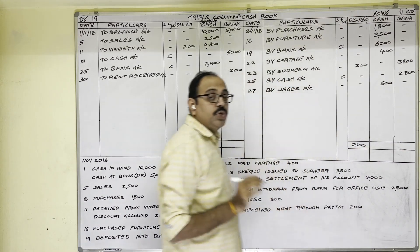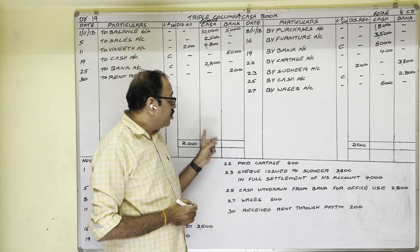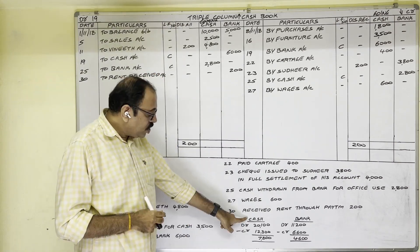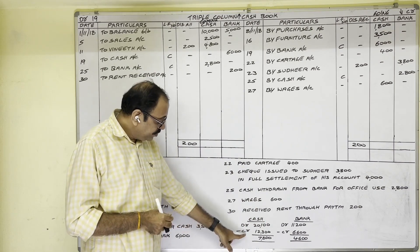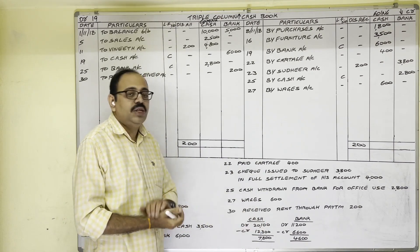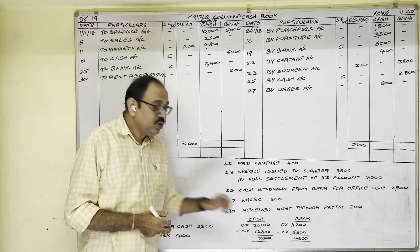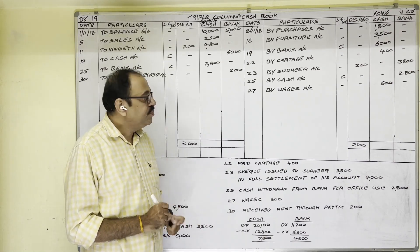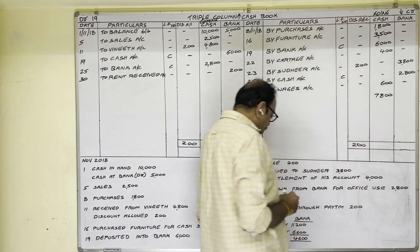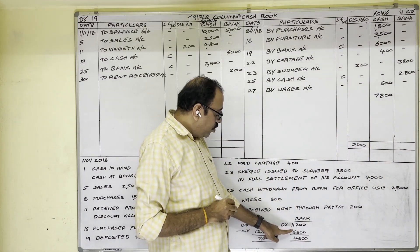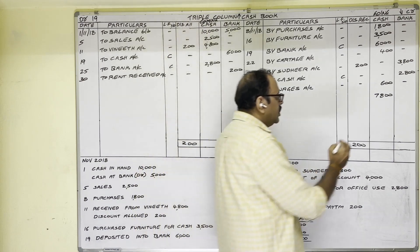Cash and bank columns we should balance. First in rough notes find the totals. For the cash column: debit total is 20,100 and credit total is 12,300. The credit total is less, so the difference is 7,800 — write this on the credit side in the cash column. For the bank column: debit total is more and credit total is less, so the difference is 4,600 — write this in the bank column on the credit side.